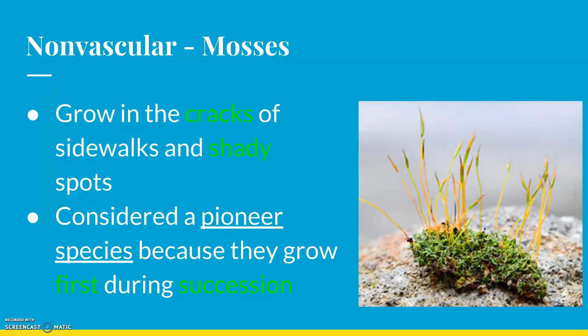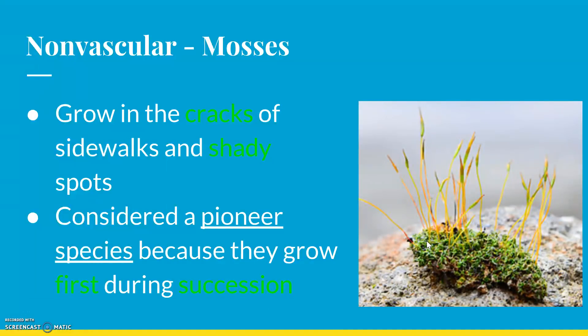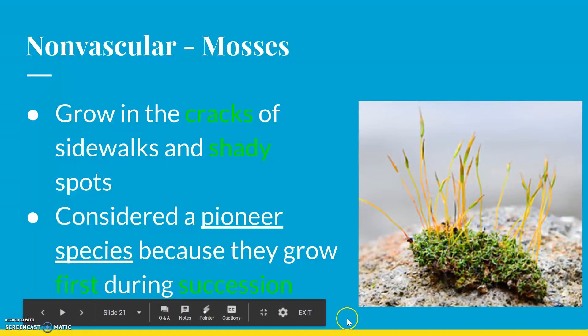They are considered a pioneer species. What that means is if a catastrophe happens, like a fire, the first plants that are going to come back to that area are going to be pioneer species — and moss is going to be one of them. Because it's low growing, it's very quick to grow. If there's nothing around and everything has been burned down, moss is going to come back first. Then you're going to get grass, then bushes and shrubs, and eventually big trees — but that's going to take a while.